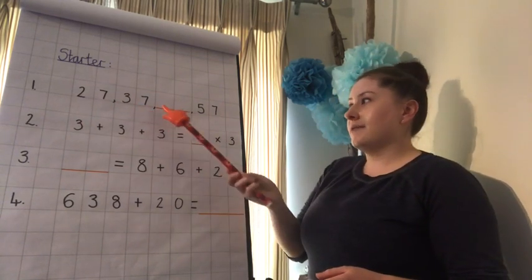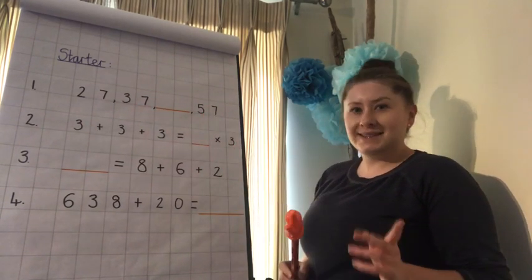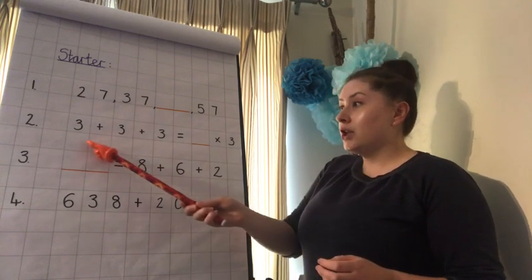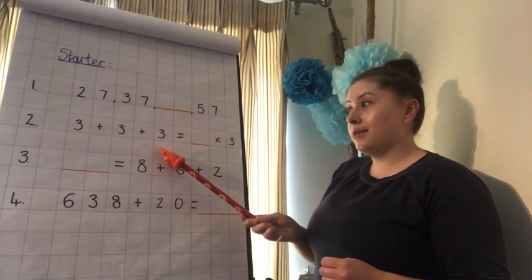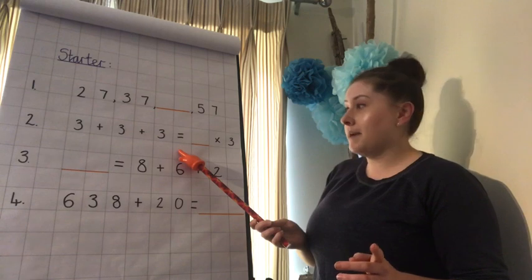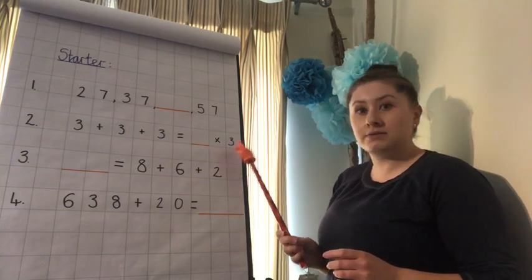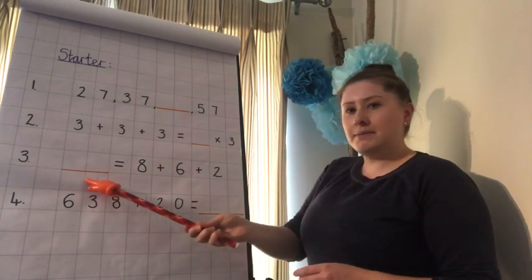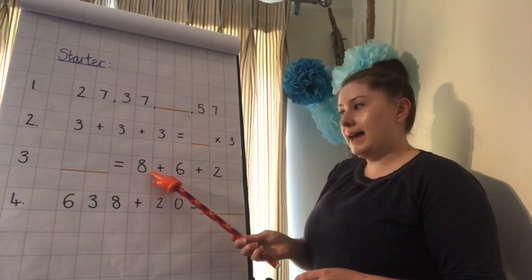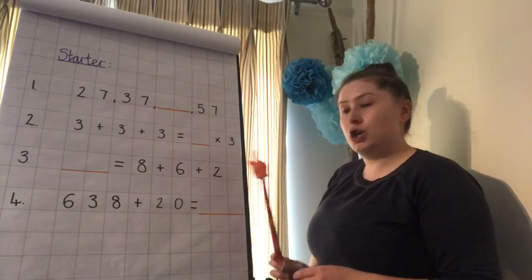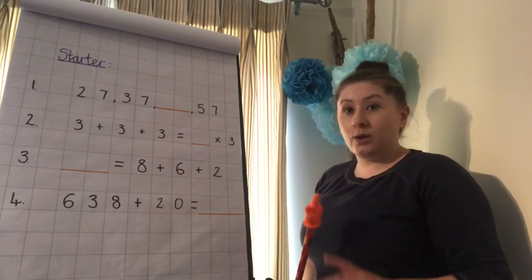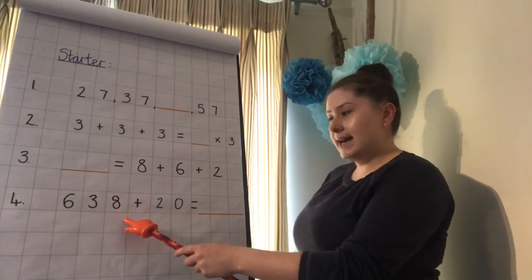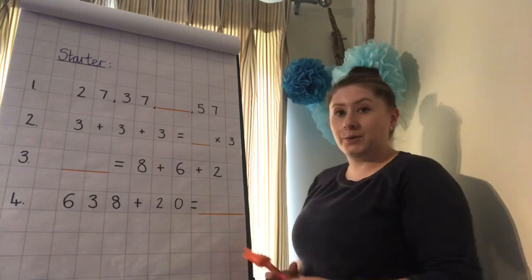27, 37, 57. Think about what the missing number is. Question 2: 3 add 3 add 3 equals, or it's the same as, something times 3. Question 3: something equals 8 add 6 add 2. And your last question for our warm-up today is: 638 add 20 equals.